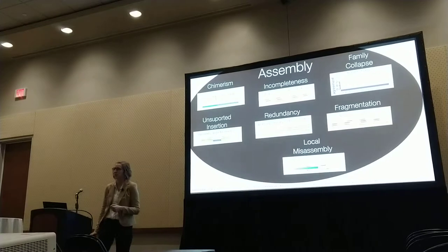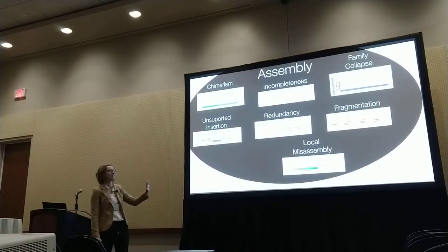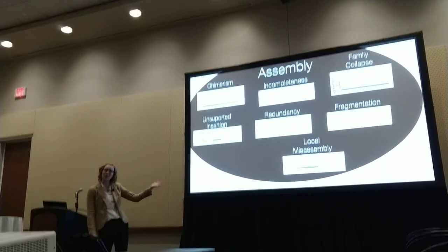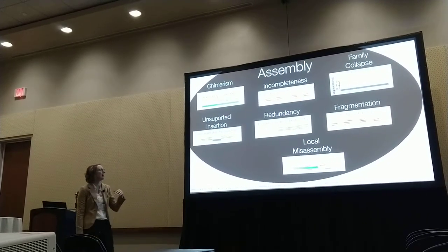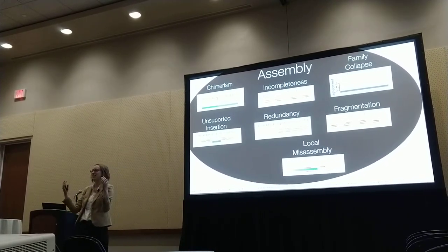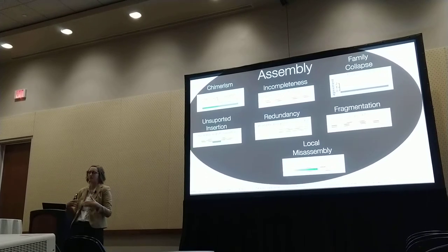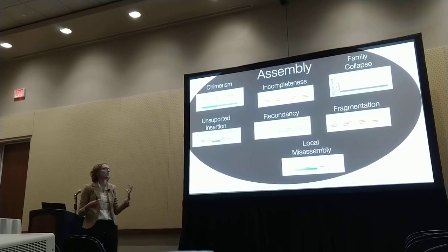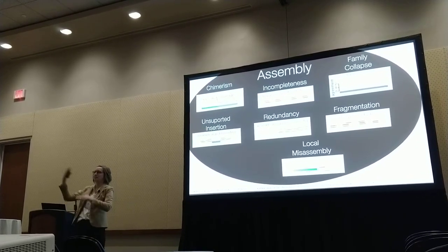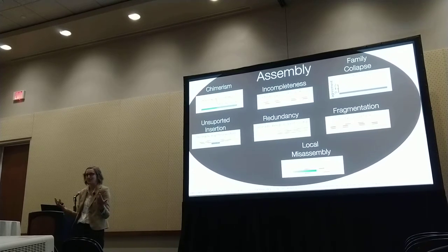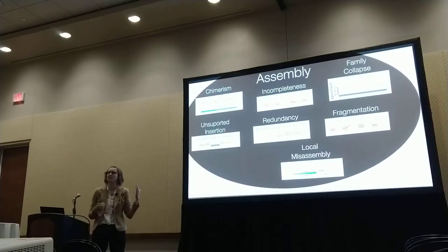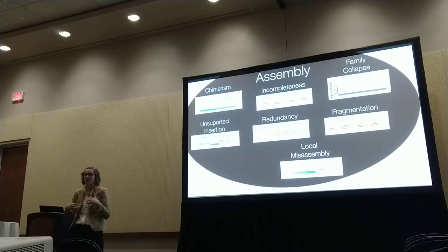Let's zoom in on the assembly process. This is actually a list of things that can go wrong. We can have chimeric transcripts where the assembler has stuck together two things that belong in different transcripts. We can also have things like gene family collapse, where an entire gene family has been collapsed into a single transcript. It can even be something as simple as reads being put in the wrong orientation.